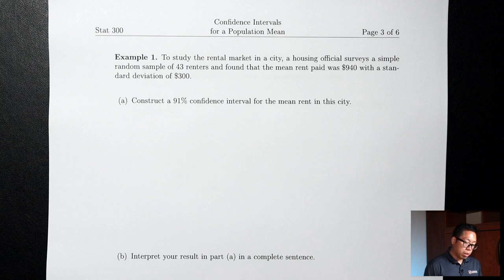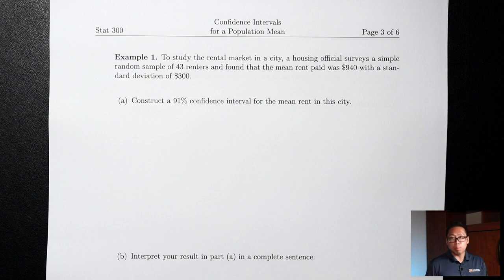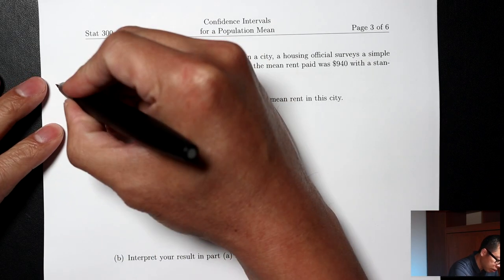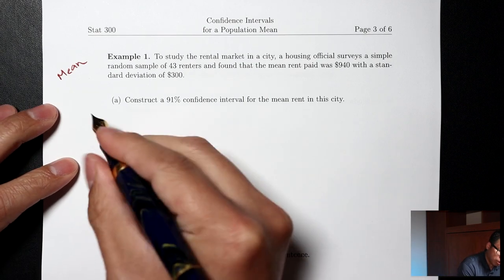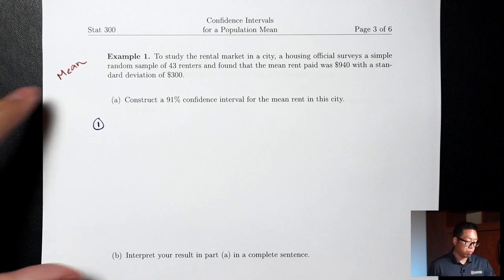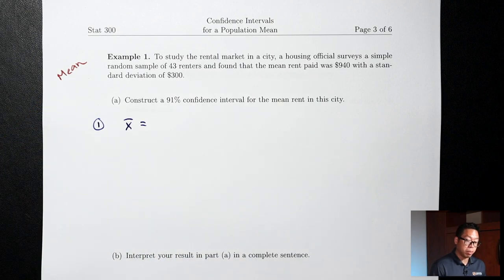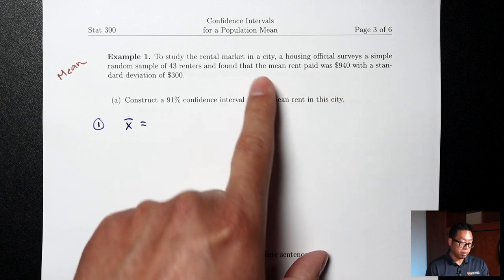Example 1: To study the rental market in a city, a housing official surveys a simple random sample of 43 renters and found that the mean rent paid was $940 with a standard deviation of $300. Part A: Construct a 91% confidence interval for the mean rent in this city. This is clearly a mean question. Step one: find the point estimate, which for means is x-bar. The mean from the sample is $940, so x-bar = $940.